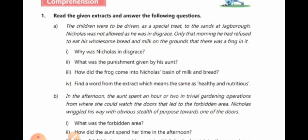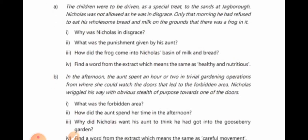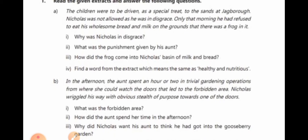Question: Why was Nicholas in disgrace? Nicholas was in disgrace because he had refused to eat his wholesome bread and milk on the grounds that there was a frog in it. Question: What was the punishment given by his aunt? Nicholas was not allowed to go to the sands at Jackborough, where the other children were going as a special treat.